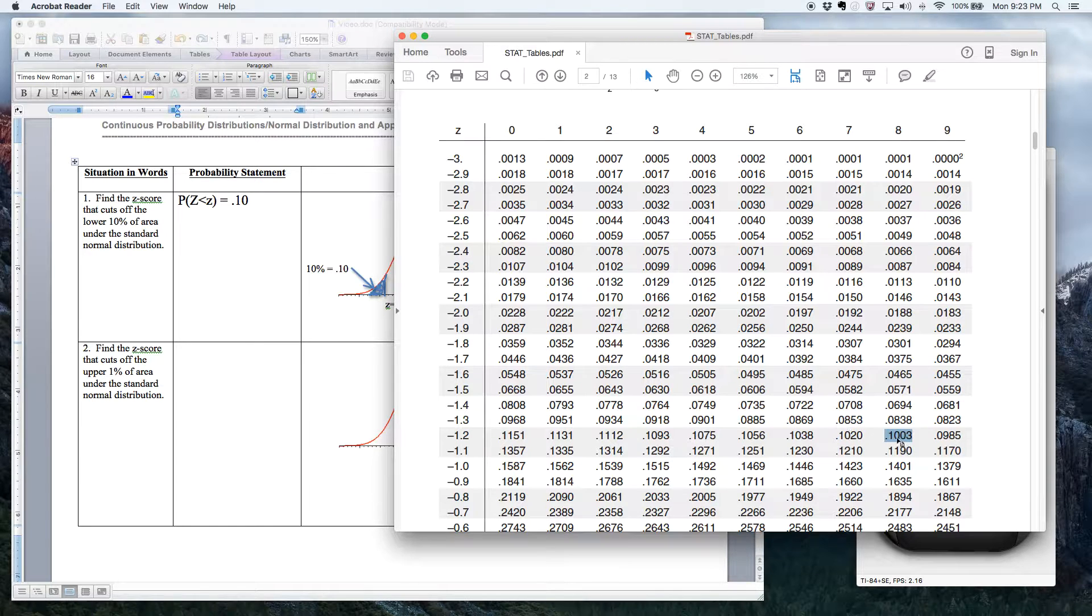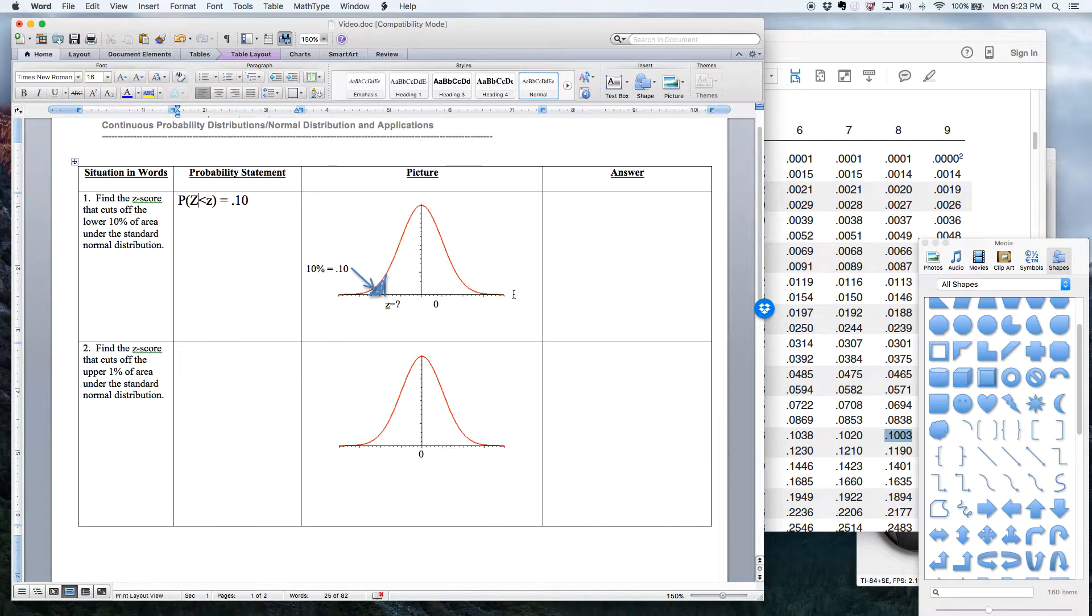All right, so now if we follow across this way, that's negative 1.2. Going up, that's 8. So that z-score is negative 1.28. All right, so in other words, if I put negative 1.28 right there, that'll get me as close as I can to cutting off an area of 10%. So that is z equals negative 1.28.